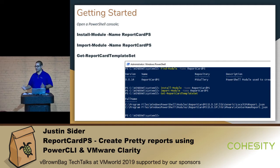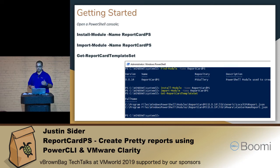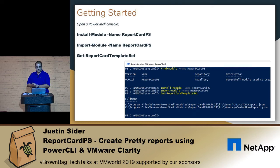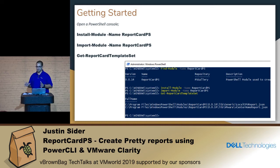So getting started: open up the PowerShell console, set your user, install the module named Report Card PS, import it, and then you can run Get-ReportCardTemplateSet. These are the ones that I'm including for you. You can also pass in a path to Get-ReportCardTemplateSet if you have a set of these JSON template files. Here's an example of what it looked like when I did it on my machine. One thing I should mention — I haven't tested this on PowerShell Core. Windows PowerShell 5.1 is what everything was tested with.